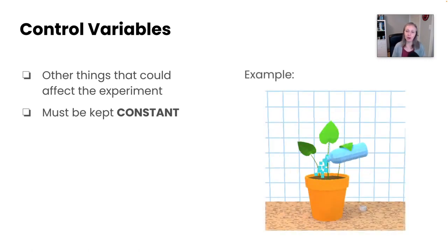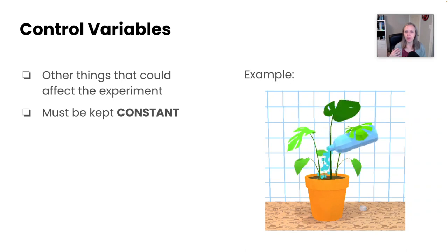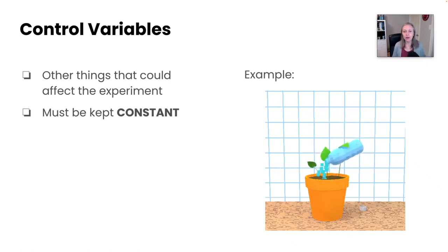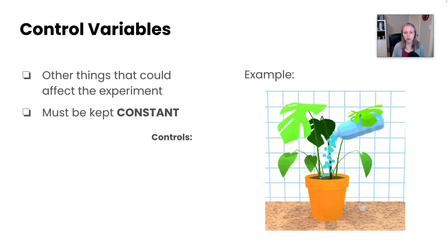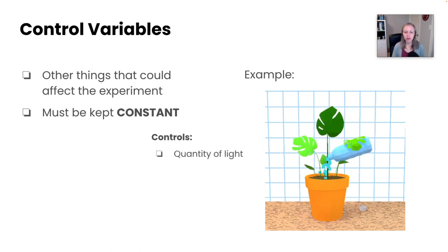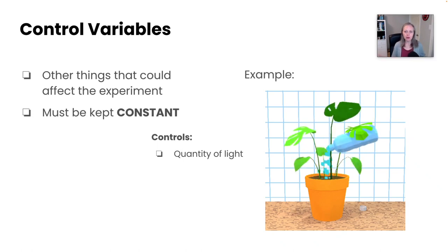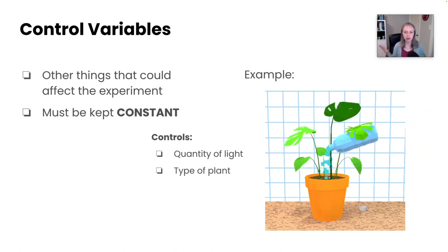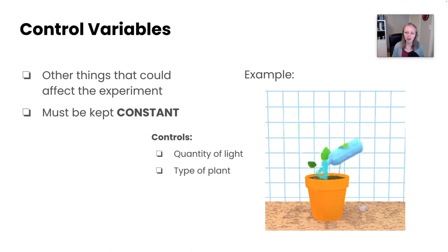Let's return back to our example. So if we're looking at watering plants, the volume of water that affects the height of the plant growth, what would the control variables be here? Well, you could have a variety of different controls. For example, you could control the quantity of light. So how much light are all of your plants getting? How many minutes or hours are you exposing them to light? You could also control for the type of plant. You wouldn't want two different plants because then you would be comparing and you would have that other factor in there too. So you want to control the type of plant.